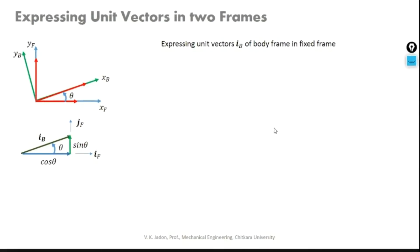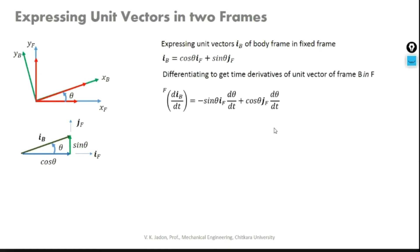We need the component of unit vector IB along the fixed frame, that is along XF and YF. For that we have to project IB onto the XF axis and onto the YF axis. We can write IB equals cos theta times IF plus sin theta times JF. So it is cos theta IF plus sin theta JF.